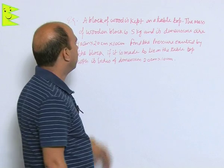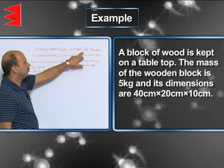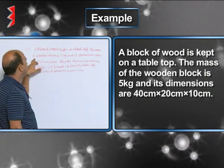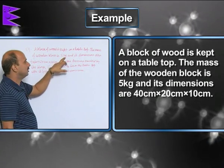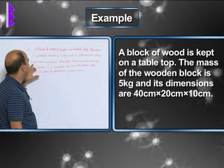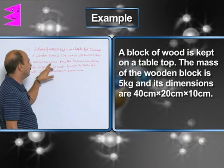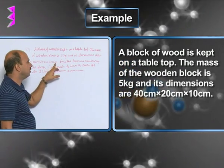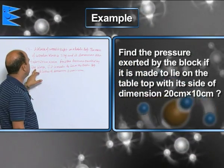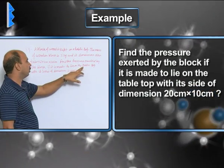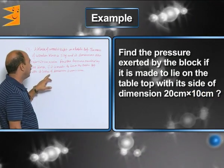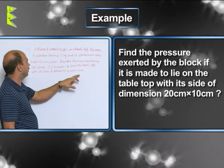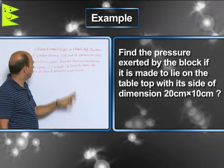Now see in this example, a block of wood is kept on a table top. The mass of the wooden block is 5 kg and its dimensions are 40 centimeter by 20 centimeter by 10 centimeter, length, breadth and height. Find the pressure exerted by the block if it is made to lie on the table top with its sides of dimensions 20 centimeter and 10 centimeter.